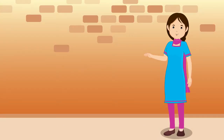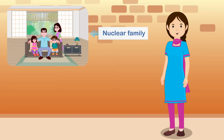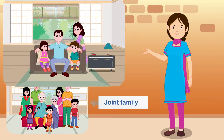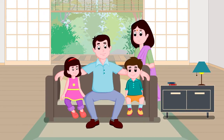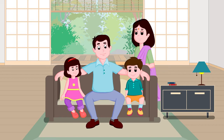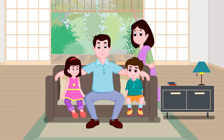A family can be of two types: Nuclear Family and Joint Family. A family where only parents and their children live together is called a Nuclear Family. In a nuclear family, grandparents do not live with them.